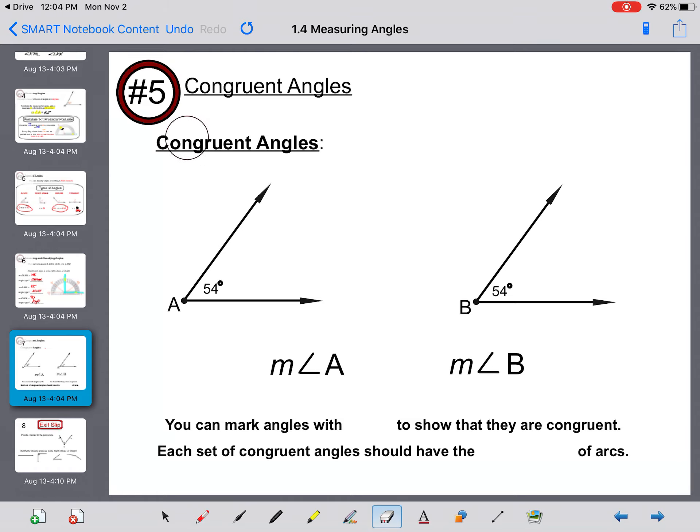Congruent angles. Here's that word again. Angles with the same measure. Congruent always means the same. You have angle A and angle B, and they're both designated as 54 degrees. So the measure of angle A is congruent to the measure of angle B. You can mark angles with arcs to show that they are congruent. Each set of congruent angles should have the same number of arcs. If angle A and angle B are congruent, there's one arc for each. With larger images and multiple angles, as long as we keep them the same, we're allowed to use 2 and 2, or 3 and 3, or 4 and 4.